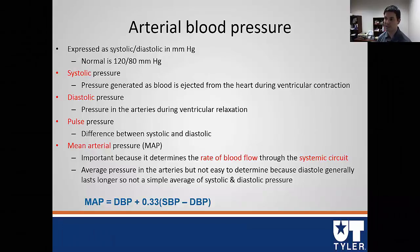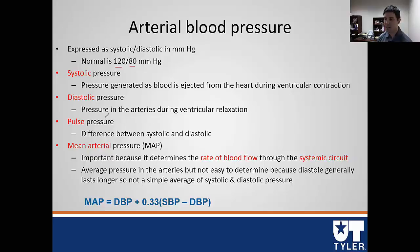Normally blood pressure is expressed as systolic over diastolic. Normal blood pressure is 120 over 80, that's in millimeters of mercury. This relates to systole and diastole of the heart. Systolic blood pressure is generated as blood is ejected from the heart during ventricular contraction, whereas diastolic blood pressure is the pressure in the arteries during ventricular relaxation. Pulse pressure is simply systolic minus diastolic.